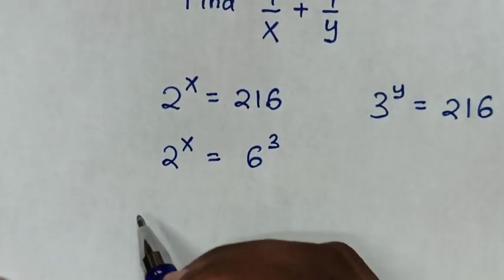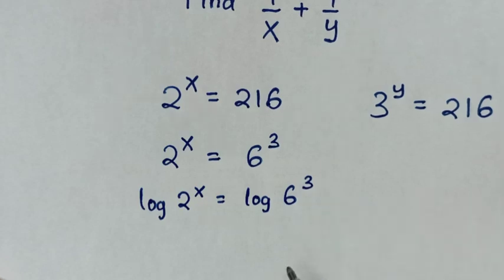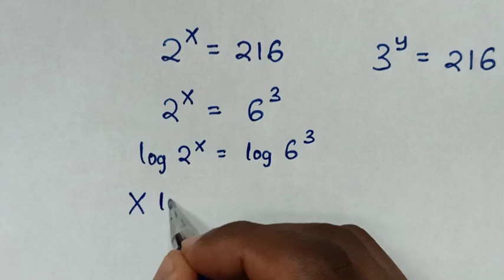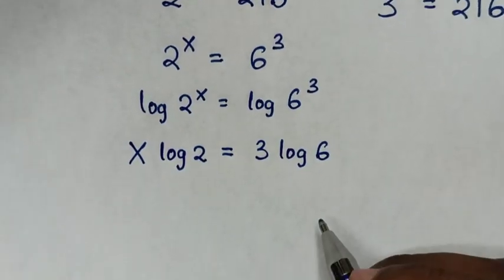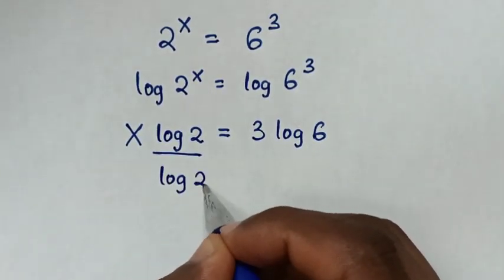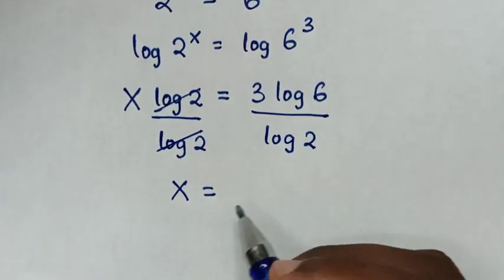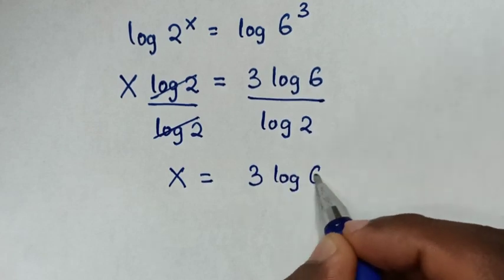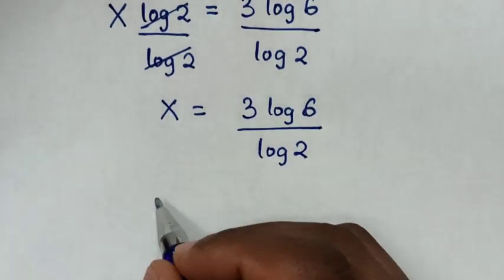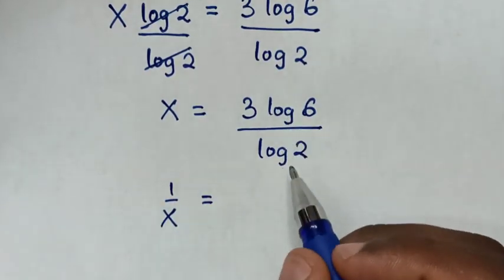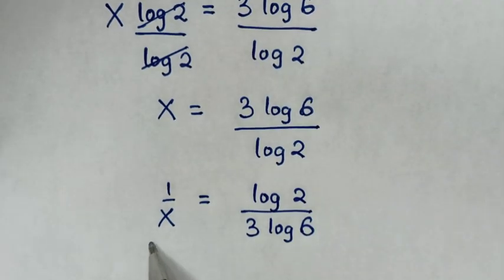We'll apply log on both sides. So log of 2 power of x is equal to log of 6 power of 3. The power of x moves to the front: x log of 2 is equal to 3 log of 6. Dividing both sides by log of 2, we get x is equal to 3 log of 6 over log of 2. The reciprocal gives us 1 over x is equal to log of 2 over 3 log of 6.